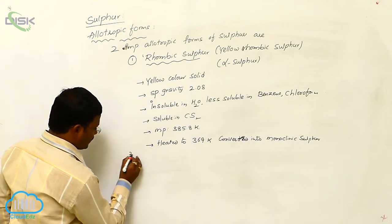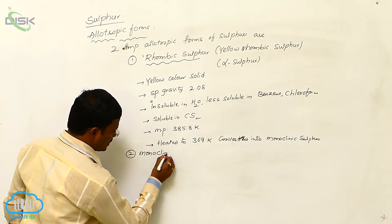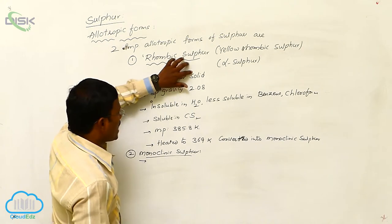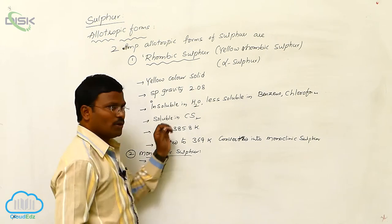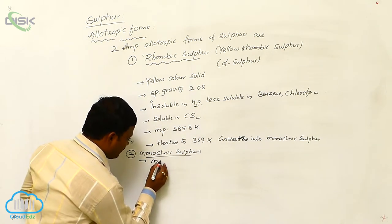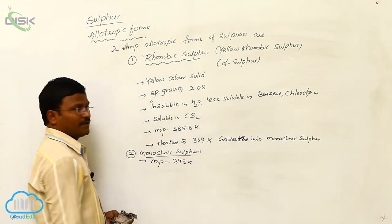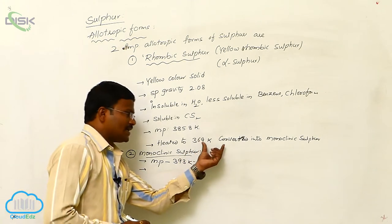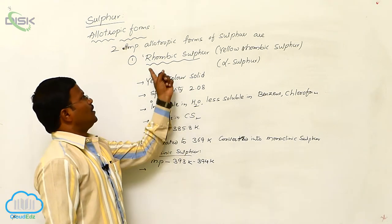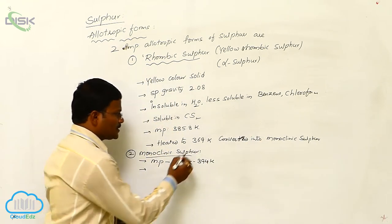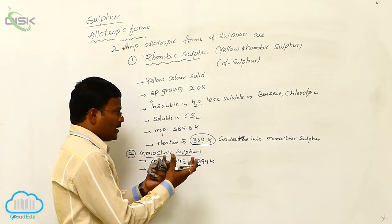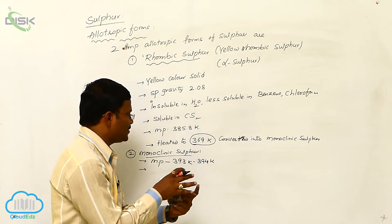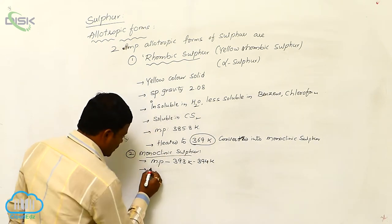Monoclinic sulfur is a colorless solid having a specific gravity of nearly 1.93. It is insoluble in water as well as carbon disulfide. The melting point of monoclinic sulfur is nearly 393 to 394 degrees Kelvin. The transformation of rhombic sulfur into monoclinic sulfur takes place at 369 degrees Kelvin.